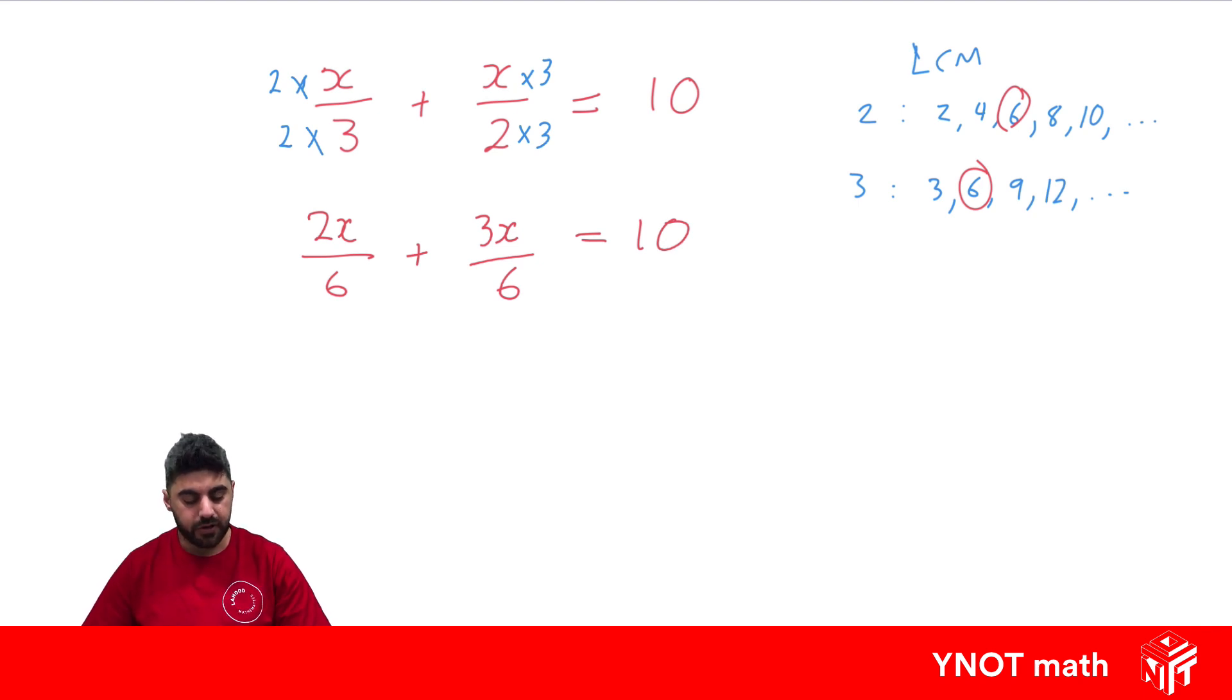This becomes a lot easier to solve now because we've got two fractions that are being added together with the same denominator. So we can do this now because when you have two with the same denominator you keep the denominator the same and you add the numerators together. So 2x plus 3x is going to be 5x equals 10.